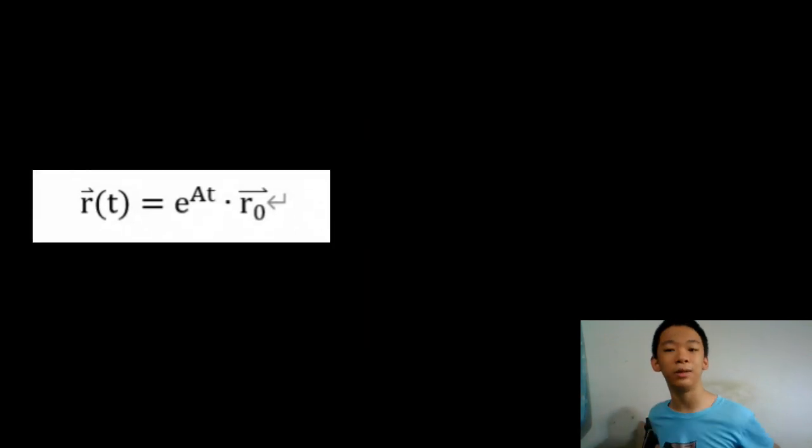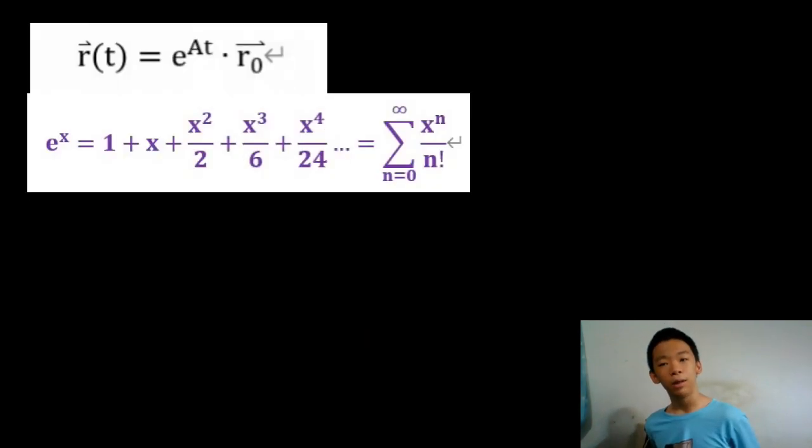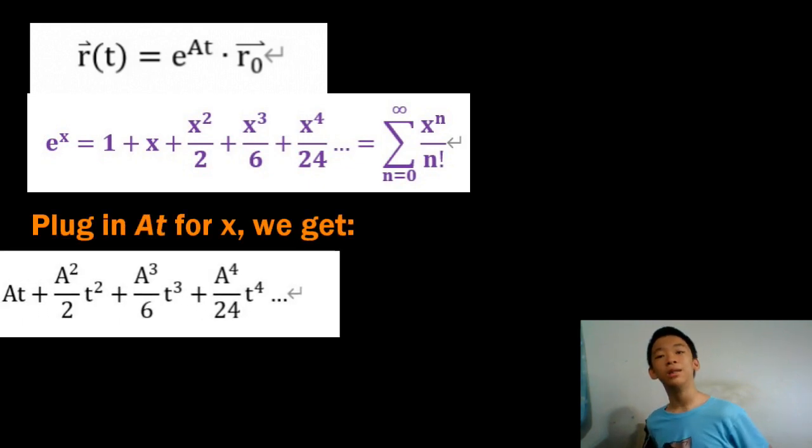Recall the power series of e to the x. When we plug in a matrix, the 1 turns into the identity. So e to the a t expands like so.